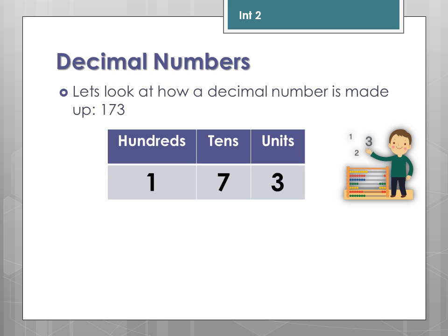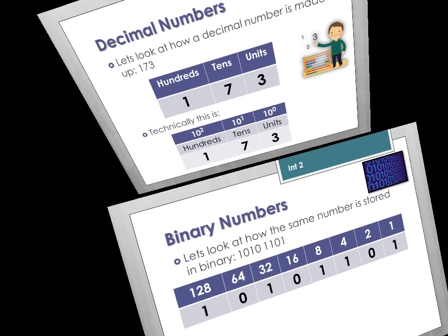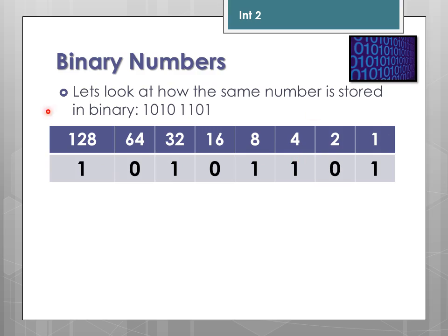So let's look at how a decimal number is made up. Going back to primary school, if you look at 173, you can break it down to hundreds, tens and units. Technically, this is because 10 to the power of 0 is 1, 10 to the power of 1 is 10, and this increases by a factor of 10 going upwards in value. These are the placeholder values you will look at.